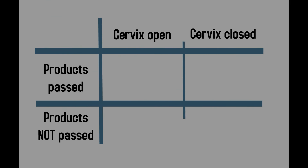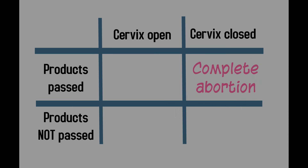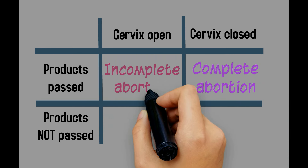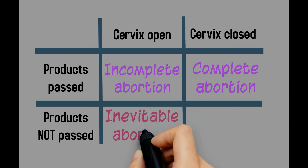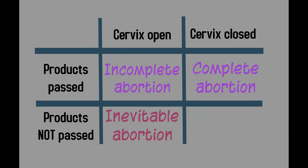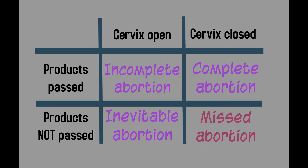There are four definitions important to remember pertaining to spontaneous abortion. In a complete abortion, all of the products have been passed without the need for any intervention, and the cervix is closed. In an incomplete abortion, some but not all of the products have passed, and the cervix is open. In an inevitable abortion, the cervix is dilated but the products of conception have not been passed. In a missed abortion, there has been a fetal demise, usually for a number of weeks, but the products have not been expelled.